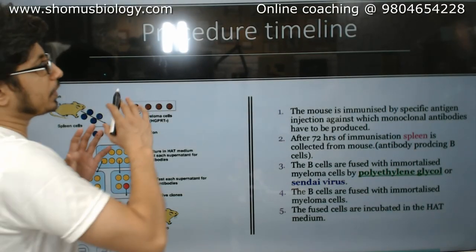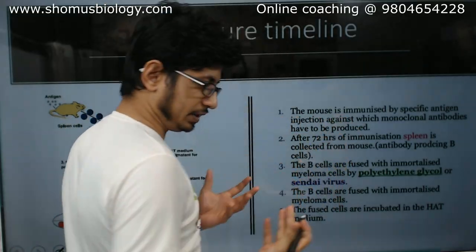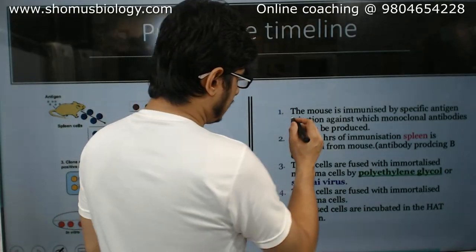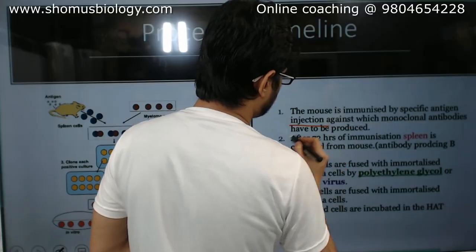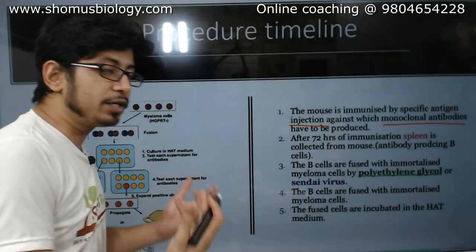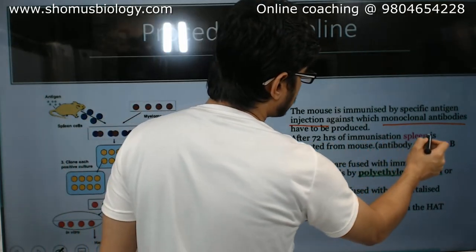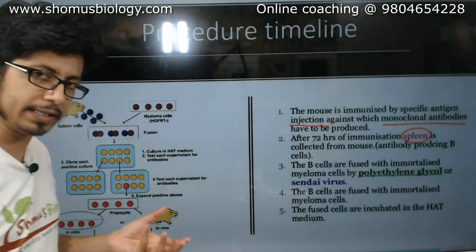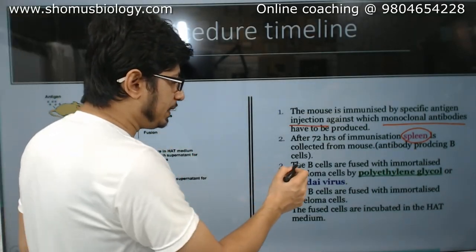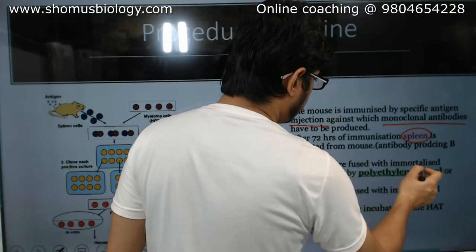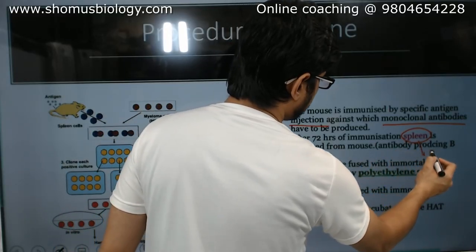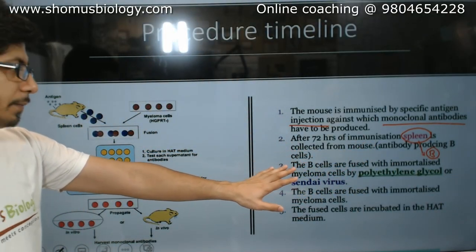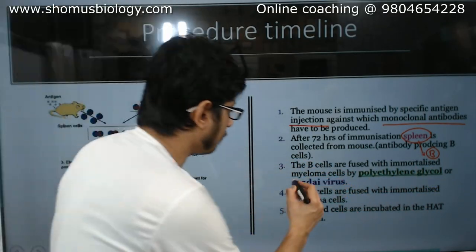The mouse is used because the B cells will be derived from the mouse spleen. The mouse is immunized by a specific antigen injection against which the monoclonal antibody needs to be produced. After 72 hours of immunization, the spleen is collected from the mouse, because in the spleen we assume that both the antigen and the antibody are present. The B cells are collected from the spleen after 72 hours of immunization and are then fused with immortalized myeloma cells.